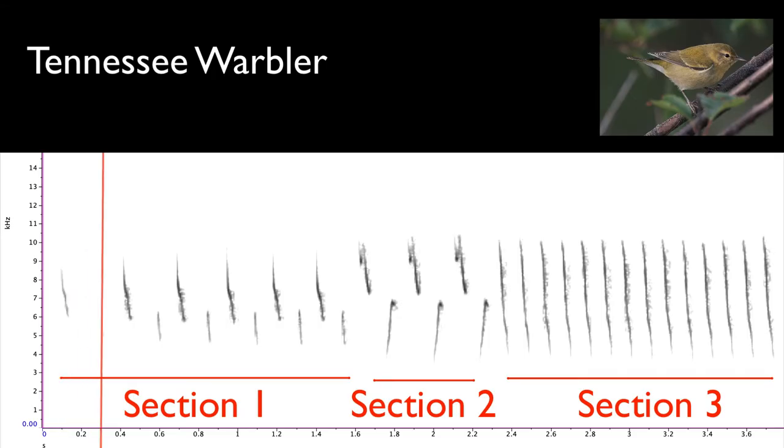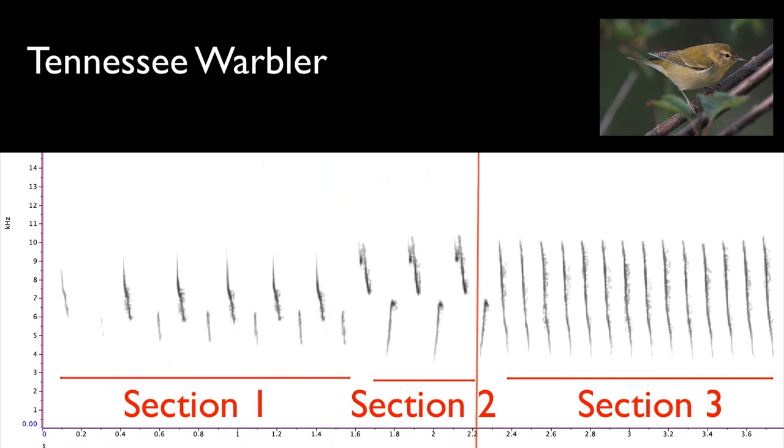Some songs have three sections, like this Tennessee Warbler song, which changes its pitch and speed twice. And other songs have lots of sections, like this American Goldfinch.